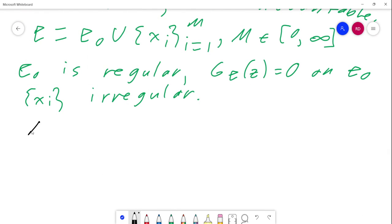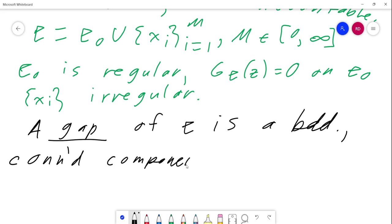A little piece of vocabulary. A gap of E is a bounded, connected component of ℝ without E. So that basically means an interval. A bounded and connected component, that has to be an interval. So let's say E were like this. Then our gaps would be here's one, here's one, and here's one.